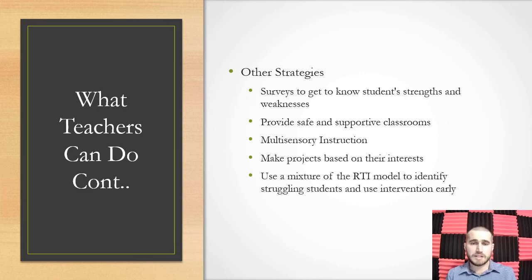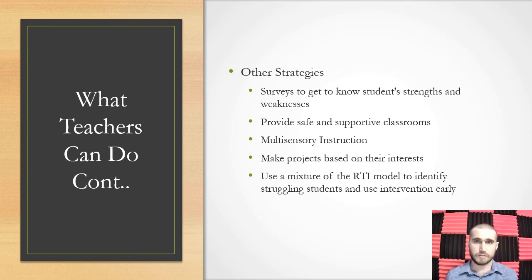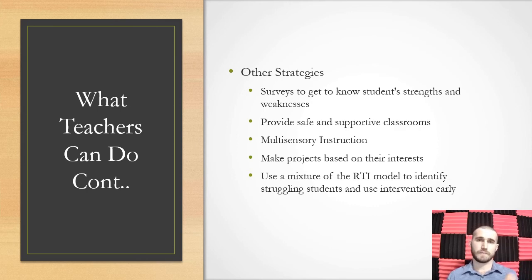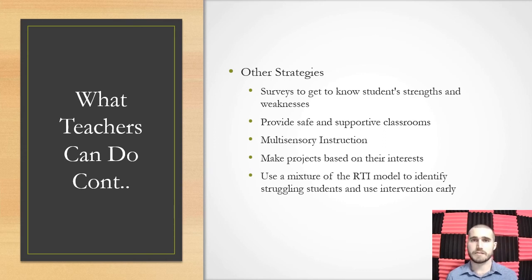Another strategy is to use multisensory instruction — involving students' other senses. This can be as simple as using note cards in different colors or vocab cards with pictures on them. One example I did in my classroom was a project on cross sections — I used Play-Doh and dental floss. Students would create a 3D shape, like a cone, take the dental floss, cut through it, and see what shape it made. That's how I introduced and taught them what a cross section is.